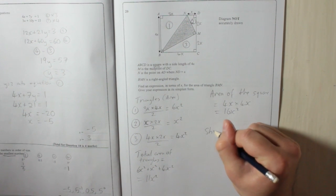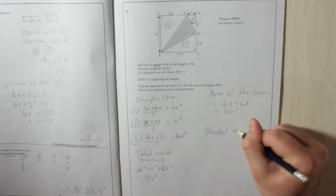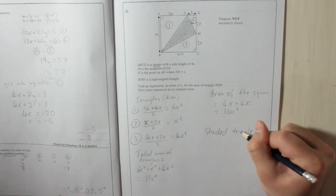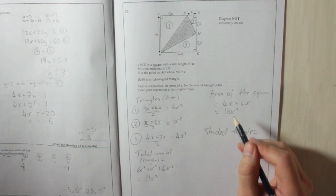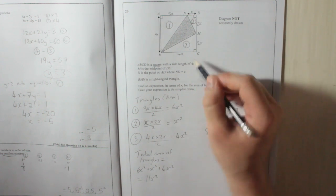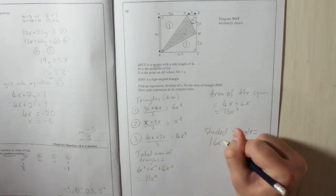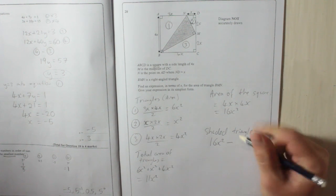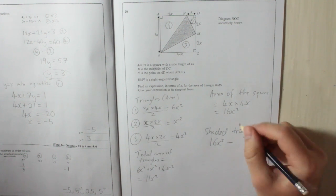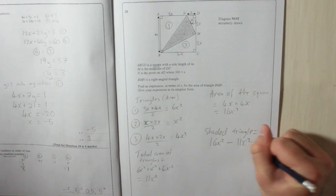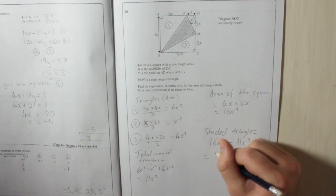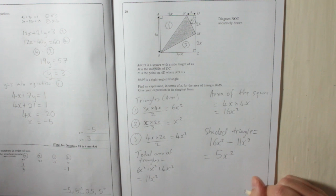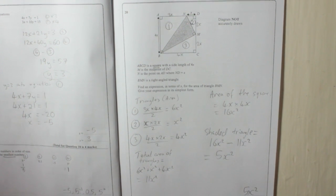So, last part. Shaded triangle, then, is the square, area of the square, take away these white bits. So, that's 16X squared, because that's the square. Subtract the total area of the triangles, 11X squared, which leaves you with 16, take away 11, 5X squared. Done. Not as hard as you thought.